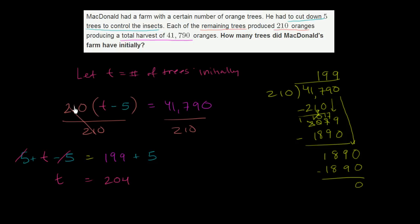Now I told you there's multiple ways to do this. You could have, instead of dividing both sides by 210, you could have decided to distribute the 210. And then you would have ended up with 210 times t minus 5 times 210. Actually, let me just multiply it out so we save some space. 5 times 210 is 1,050. Minus 1,050 is equal to 41,790.